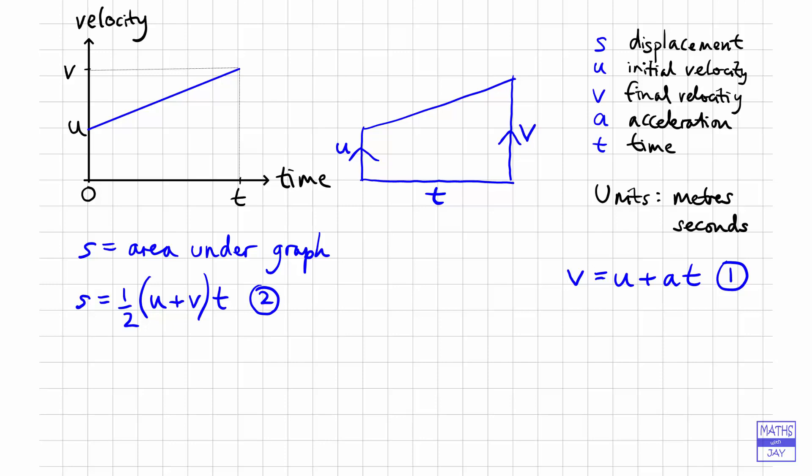Both equations involve four variables — each one is missing one of the five variables. Equation one, V equals U plus AT, doesn't involve displacement S. Equation two, S equals one half (U plus V) times T, doesn't involve acceleration A. We can combine these two equations to eliminate each variable in turn, ending up with five equations in total, each containing four variables and each missing a different one.